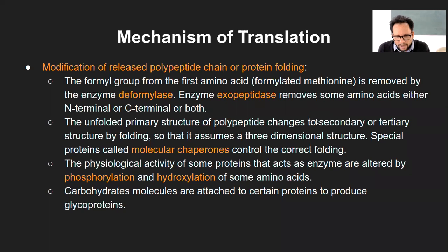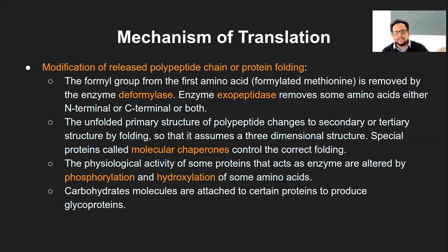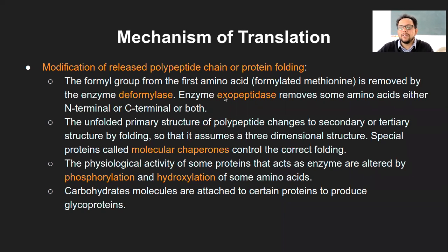The last stage was termination of polypeptide chain synthesis because of a releasing factor coming into picture and the last stop codon, which does not code for a tRNA molecule. So there is no tRNA molecule to recognize the termination codon; it ultimately releases this releasing factor which dissociates the whole assembly. That was the whole mechanism of translation. Now we will cover what we have not covered so far: the last stage is modification. Whatever protein has been synthesized is not going to be functional, because it needs certain modification.